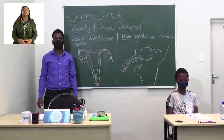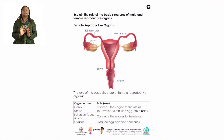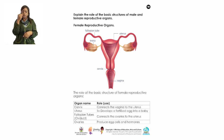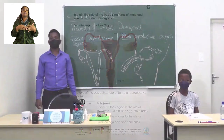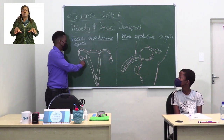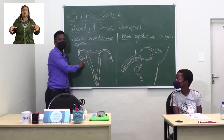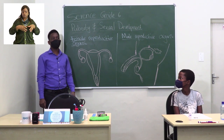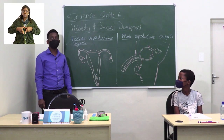Let us now turn to page 19, where we will look at the female reproductive organs. Remember, we are expected to describe the role of the basic structures of the male and female reproductive system. Let us turn to the chalkboard so we can discuss this in detail. On the chalkboard I have the female reproductive organ, and we are now going to label it, and afterwards we will look at the role of these structures.